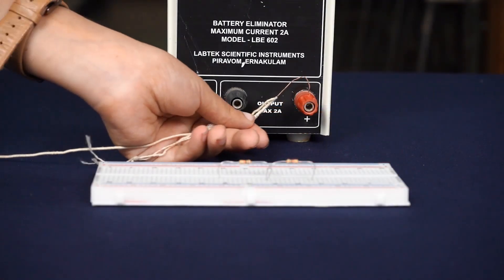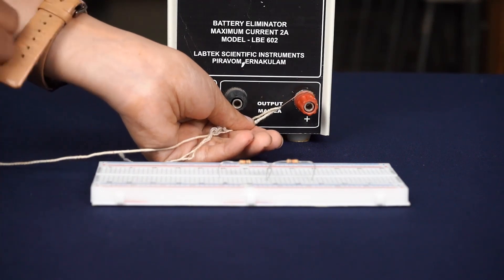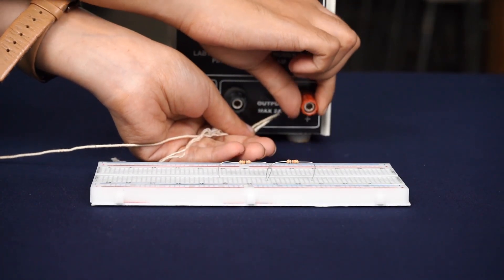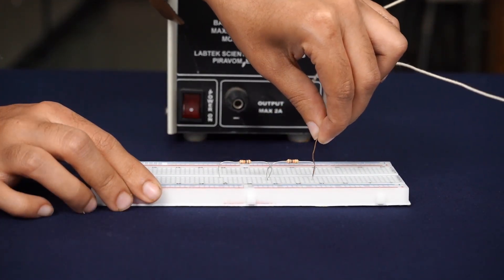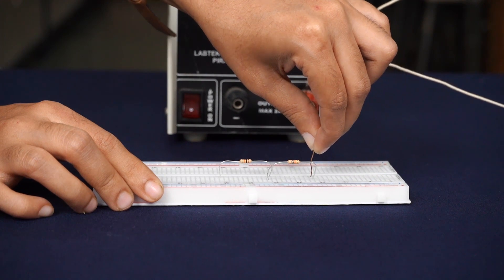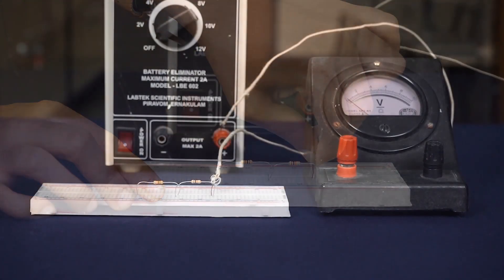Connect the positive terminal of the cell to resistors. Connect the voltmeter parallel to one of the resistors. This position measures the voltage across the resistor.